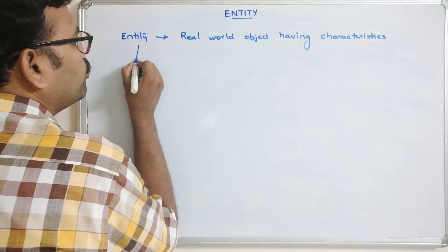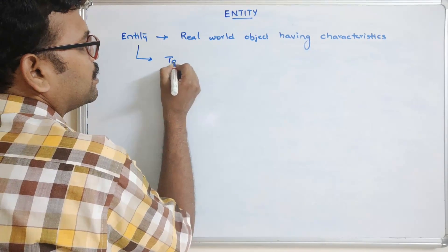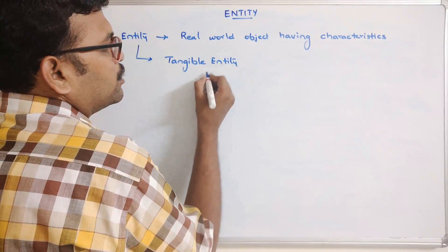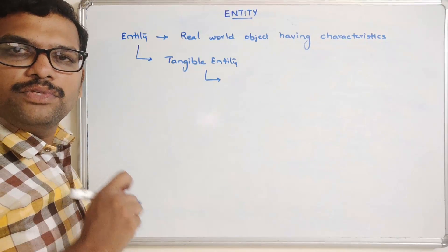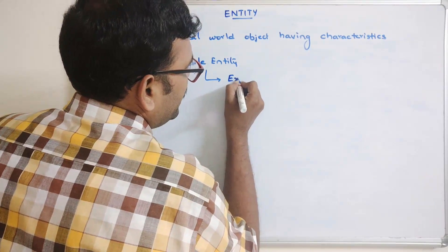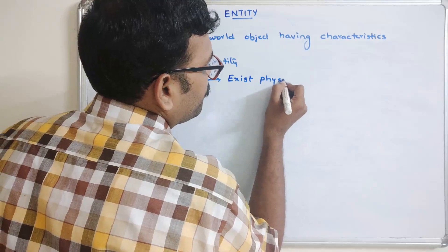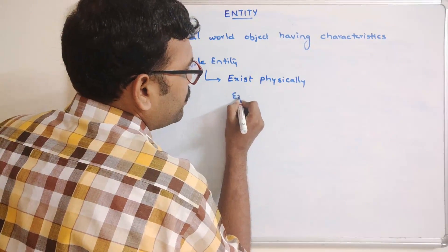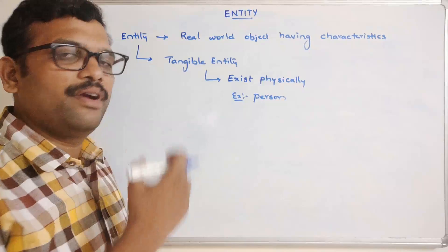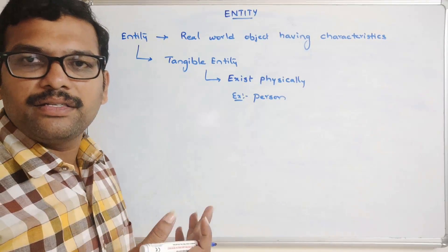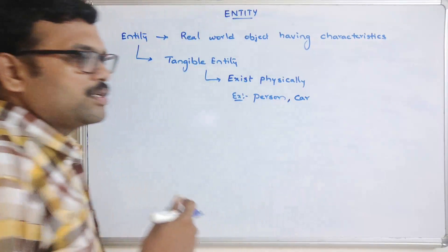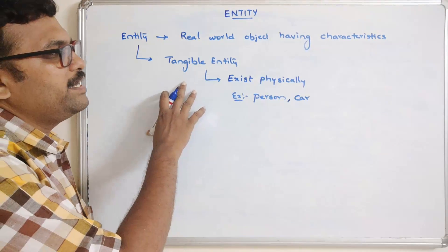We have two types of entities. One is a tangible entity. Tangible entity means the entities which exist physically are called tangible entities. Examples include a person, which can have different characteristics like name, address, contact number, etc. Similarly, a car is also a physical entity, so we call it a tangible entity.